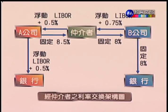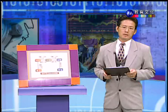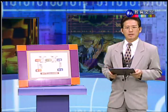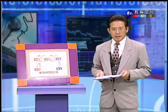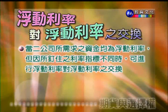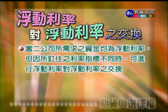对于仲介机构来讲它总共获利了0.75%。这种仲介机构介入的利率交换使得三方都得利、都节省了成本、互取所需。利率交换也逐渐取代期货或者是选择权的某一个部分，因为不一定要支付相对上那么高的成本，这就是交换之所以崛起的原因。接下来我们就来介绍浮动利率跟浮动利率的交换，它指的是两家公司需求的资金都是浮动利率，但因为所盯住的利率指标不同，可以来进行浮动利率对浮动利率的交换。